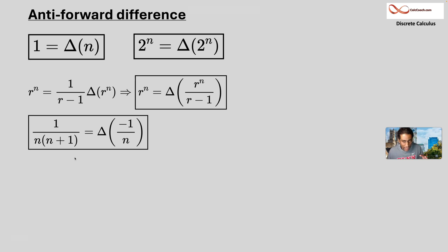One over n times the quantity of n plus one is equal to the forward difference on minus one over n. And then we have our n factorial. The forward difference on n factorial is n factorial times n. And our falling powers. The forward difference on n falling k, bring down the k, and then take away one from the falling power. But like we did with the r's there, we're going to divide by k.